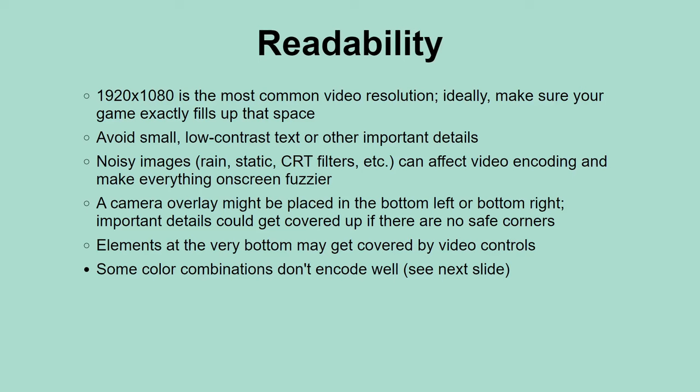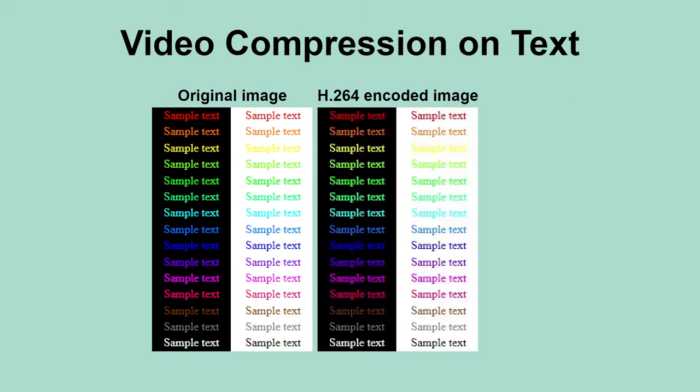Going back to video compression, there's something I want to show in detail. Certain color combinations can be problematic for compressed videos. On the left is an uncompressed test image; on the right is that same image run through the video encoder I personally use, scaled up to double size after compression. Notice how pure red or blue text on a black background becomes much less legible, as does green text on a white background. H.264 encodes color information at half the resolution it uses for luminance data, so anything without a strong brightness contrast might turn out really muddy. Small red text is somewhat common, and orange is a reasonably safe alternative.